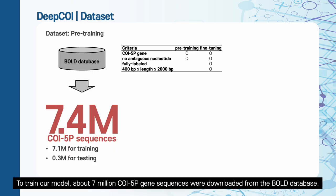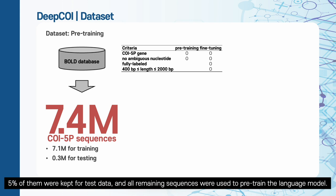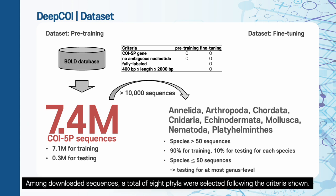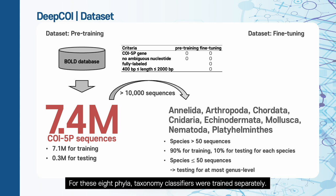To train our model, about 7 million COI gene sequences were downloaded from the BOLD database. 5% of them were kept for test data, and all remaining sequences were used to pre-train the language model. Among downloaded sequences, a total of 8 phyla were selected following the criteria shown. For these 8 phyla, taxonomy classifiers were trained separately.